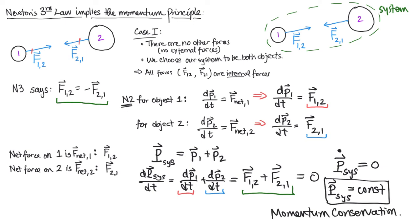Recall, this is for the case where there are no other external forces at play — we only have these two internal forces. So another way of saying this is: if there's no external force on a system, then the system's momentum is constant, even though the individual momenta of the objects within that system could be changing.